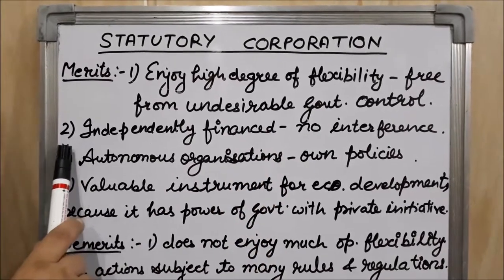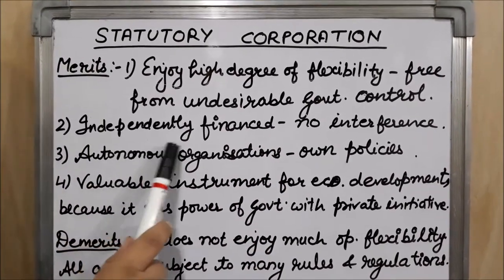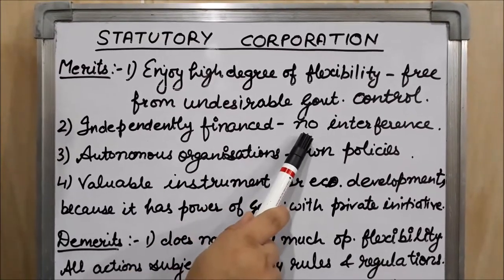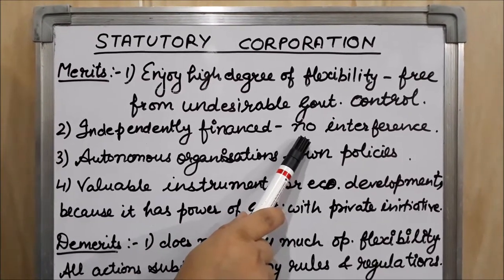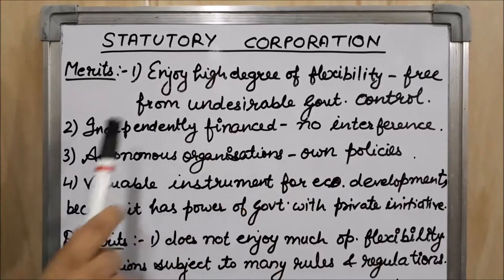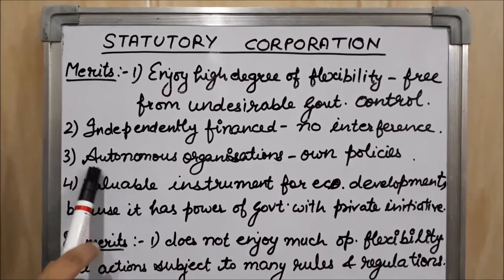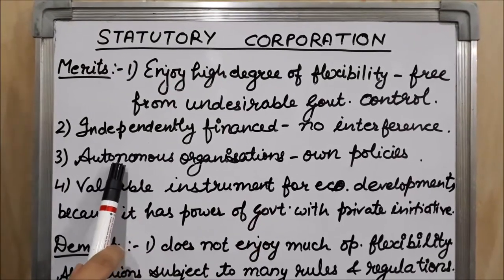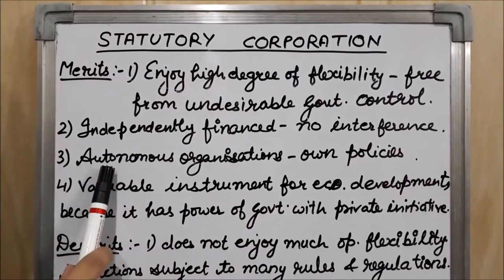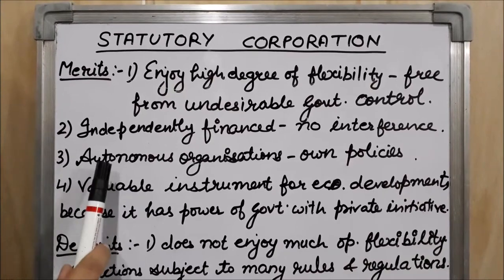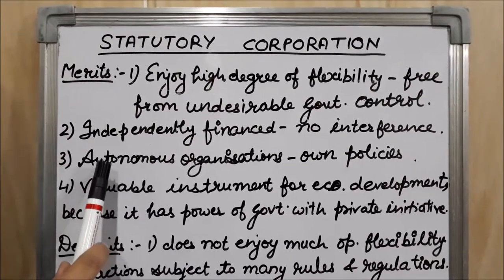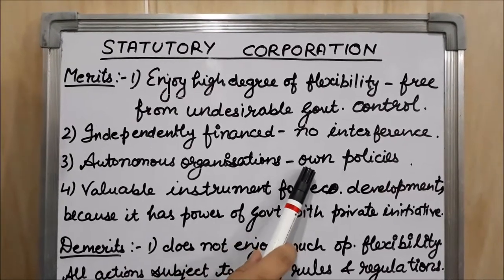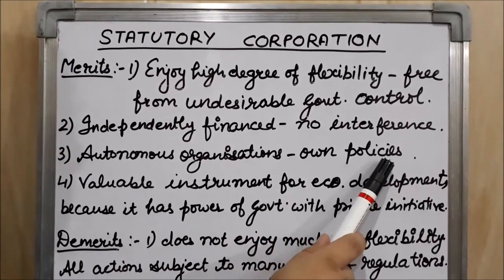Next, statutory corporations are independently financed, that's why there is no interference of the government in financial matters. Next, statutory corporations are autonomous organizations — such organizations which are free from undesirable control. Because they are autonomous, they can frame their own policies and procedures.